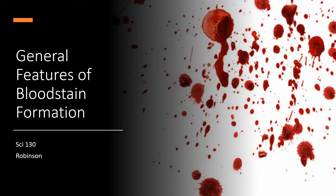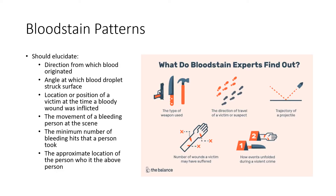General features of bloodstain formation. If you find a bloodstain at the scene, you'll need to take a look at the pattern. They might take on a sort of a splattery kind of a pattern, it might be streaky, it might be smeared.